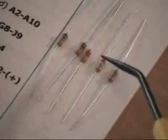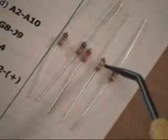Then there's a 39k ohm resistor, which is orange, white, orange, gold. That one's pretty easy to tell.